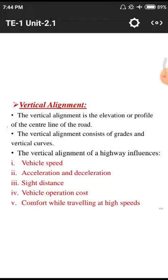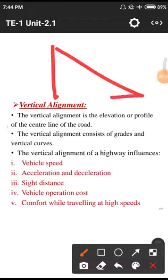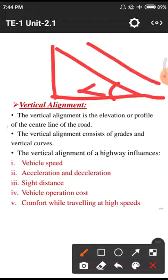Vertical alignment is the elevation or profile of the center of the road. Elevation means the increment in height — the road is at some angle alpha from a reference, and this elevation is called vertical alignment. The second point is that vertical alignment consists of grades and vertical curves; like different terrains we have different kinds of grades and vertical curves.